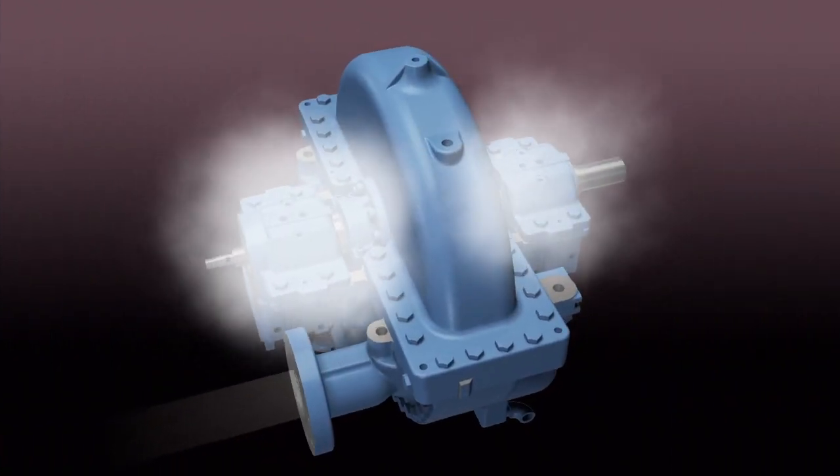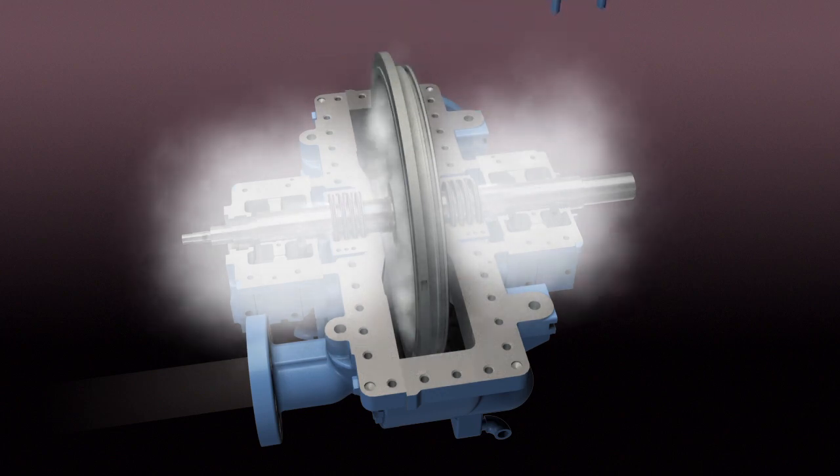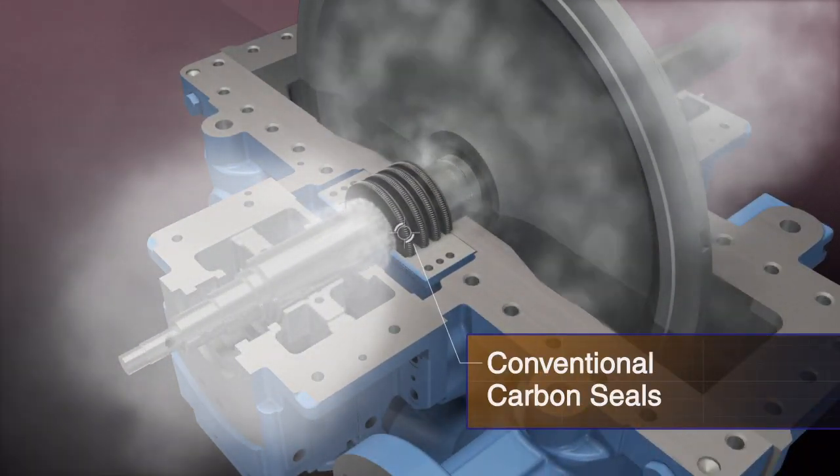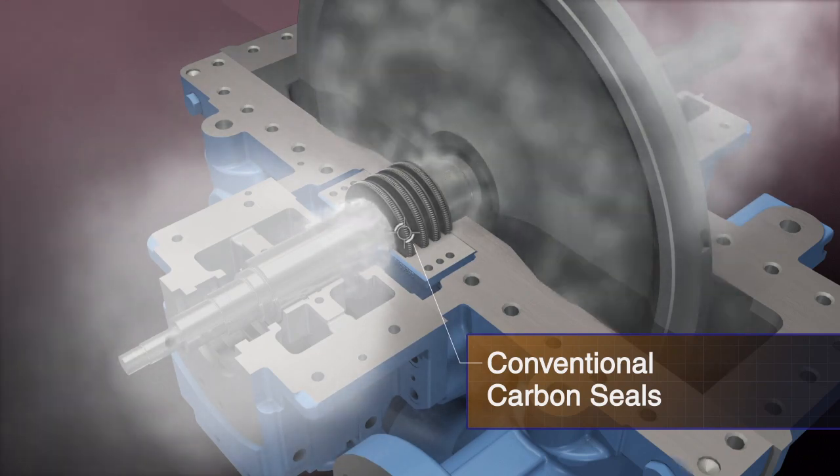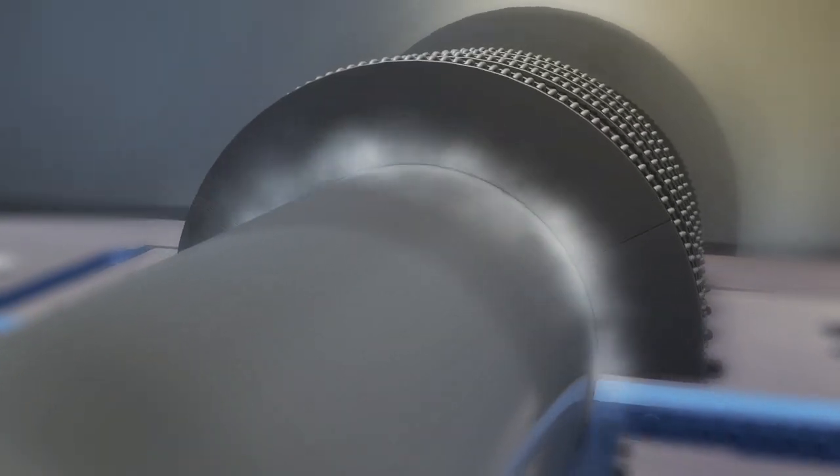Steam leakage in process steam turbines lowers efficiency and increases costs. Conventional carbon seals are weak, brittle, and wear quickly, causing them to become ineffective within a short period of time. With increasing steam leakage, periodic seal replacements are required.